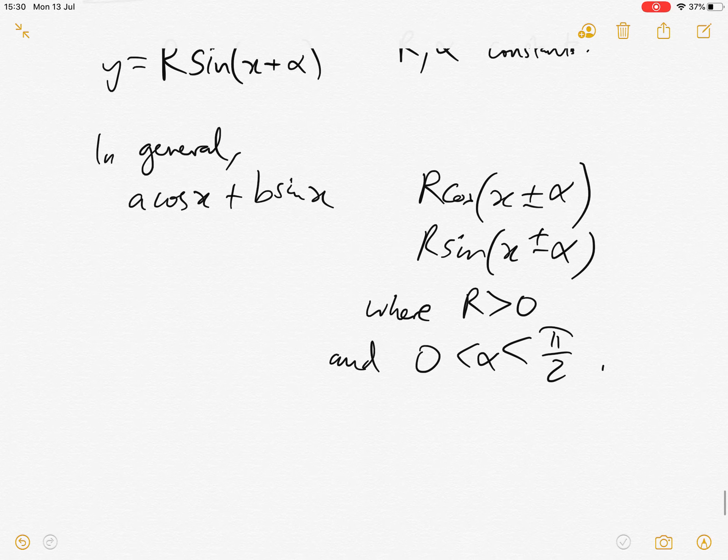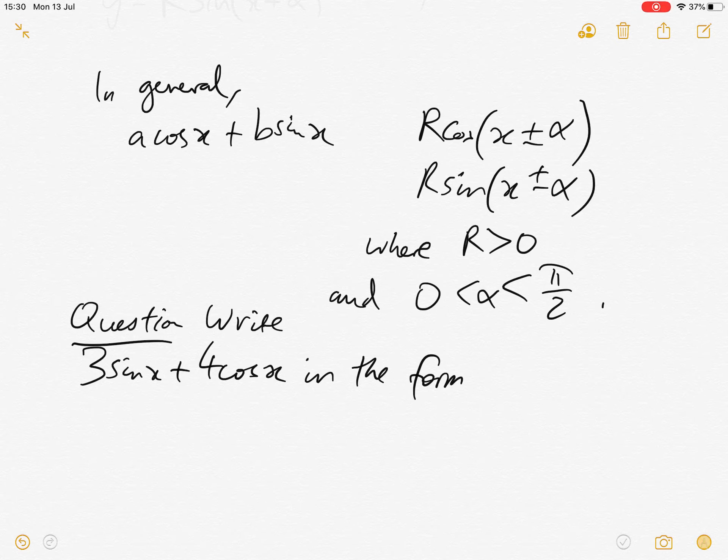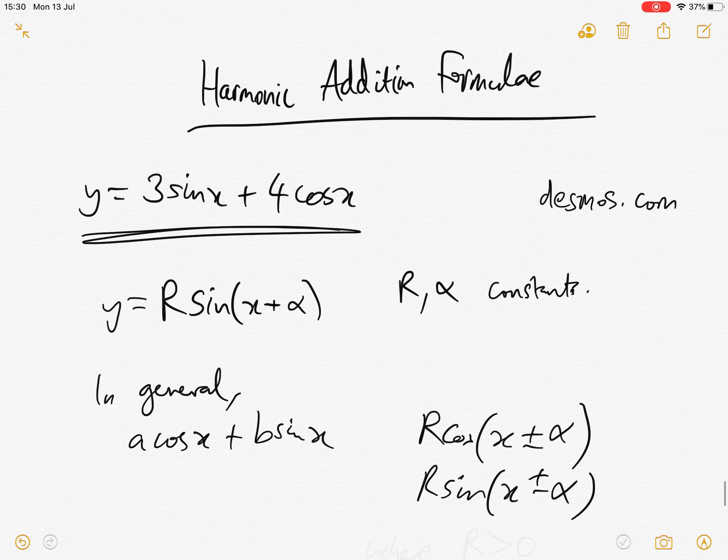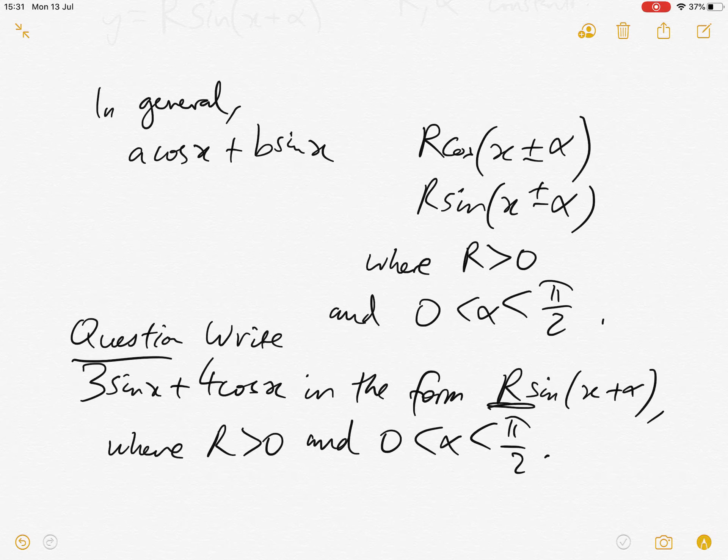So let's just go back to this, 3 sin x plus 4 cos x. We could have a question, and the question is write this in the form r sin x plus alpha, where r is positive and alpha is between 0 and pi by 2. And what I want you to do first is go back to the graph. Have another look at the graph. Can you guess what r is? Can you guess what alpha is?